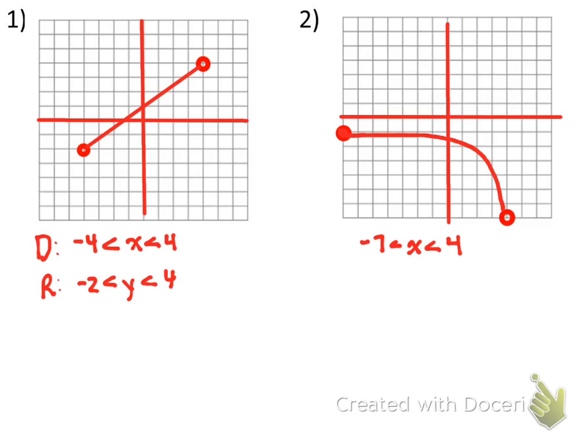On this particular point at negative seven, is it open or closed? It's closed. So, it's included. So, we want to make sure we put an equal sign under here. And this is our domain. Our domain is saying X is greater than or equal to negative seven. But it's less than four.